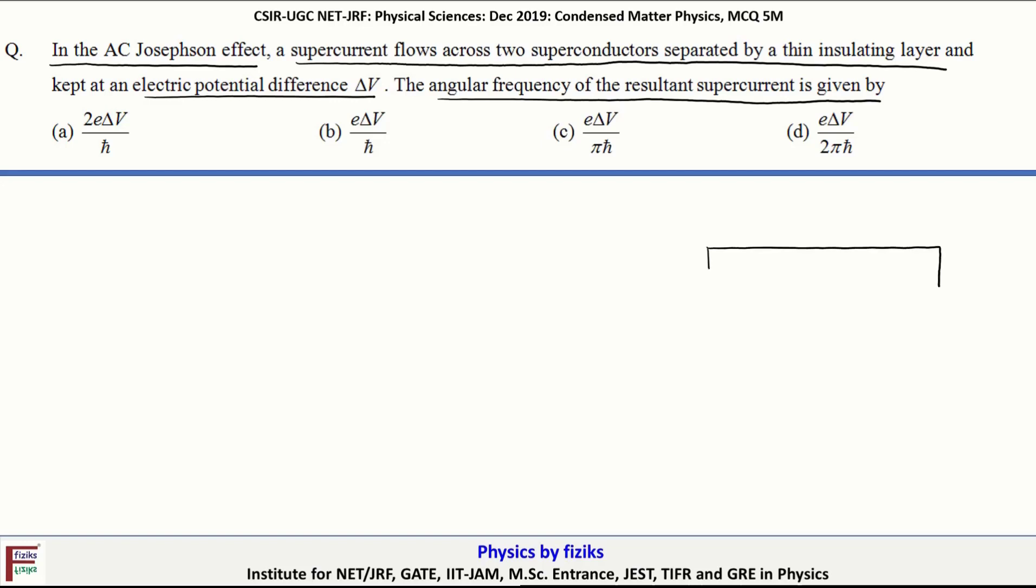According to the AC Josephson effect, if we separate two superconducting materials, let's say one and two, through a very thin insulating layer, and then apply a DC potential across the junction...